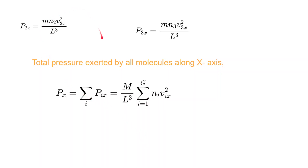In the same way, we find the pressure for the second group, third group of molecules, and so on. Let there be g number of groups of molecules. The total pressure exerted by the molecules along the x-axis is Pₓ = Σ Pᵢₓ = (m/l³) × Σ nᵢvᵢₓ² for i = 1 to g. This is the total pressure exerted by all molecules along the x-axis only, not all axes yet.